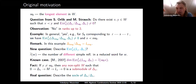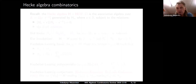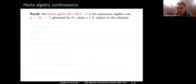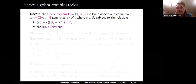To formulate the answer, which is very combinatorial, I need to recall some Hecke algebra combinatorics. The Hecke algebra associated to our Weyl group is an associative algebra over the ring of Laurent polynomials in a variable v, generated by elements H_s for each simple reflection s, subject to the braid relations and the quadratic relation (H_s + v)(H_s − v⁻¹) = 1. Plugging in v = 1 recovers the Weyl group relation H_s² = 1.